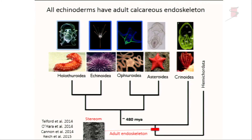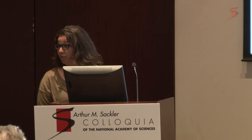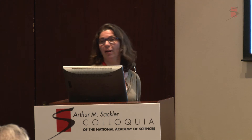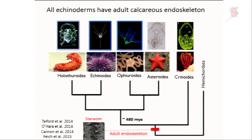The styrian skeleton evolved as an adult structure, and adult skeletogenesis features are the best characteristic for identifying echinoderms in the fossil record. However, looking at larval stages, the skeleton is present in only two of the five echinoderm classes — sea urchins and ophiuroids — and is absent in starfish and crinoids, which is the outgroup.